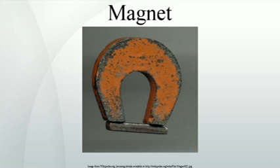An electromagnet is made from a coil of wire that acts as a magnet when an electric current passes through it but stops being a magnet when the current stops. Often, the coil is wrapped around a core of soft ferromagnetic material such as steel, which greatly enhances the magnetic field produced by the coil.